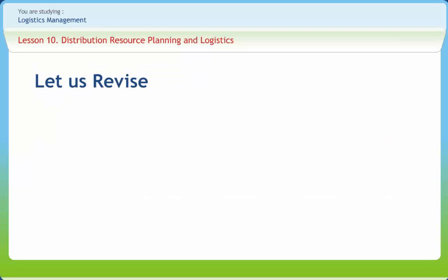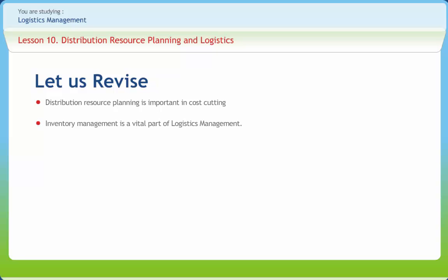Now let us revise the contents of the lesson. Distribution resource planning is important in cost cutting and having the right decisions regarding inventory. Inventory management is a vital part of logistics management. The two basic approaches used to determine when an order needs to be placed are the fixed quantity replenishment system and the fixed interval replenishment system.